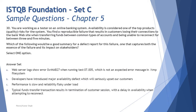Let's jump into the very first question of this chapter — question number 30. You are working as a tester on an online banking system. Availability is considered one of the top quality risks for the system, meaning it must be available all the time. Customers should not face problems when checking their balance or making credit or debit transactions. A reproducible failure is found where customers lose their connection to the bank website when transferring funds between account types and are unable to reconnect for 3 to 5 minutes.